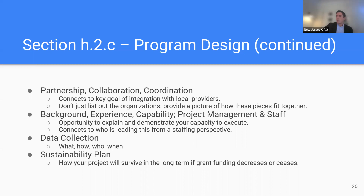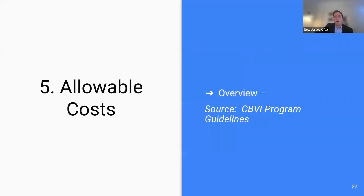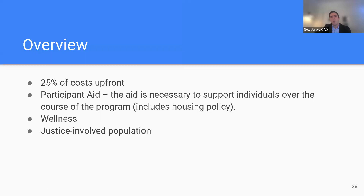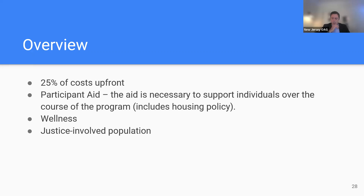The source for the allowable costs is in the CBBI program guidelines. We wanted to pull out a few highlights — these are changes from the CBBI program from last year. Successfully awarded applicants can get 25% of costs upfront — that's a big change we were able to make. It's very important for empowering organizations that are very grassroots to do this work.